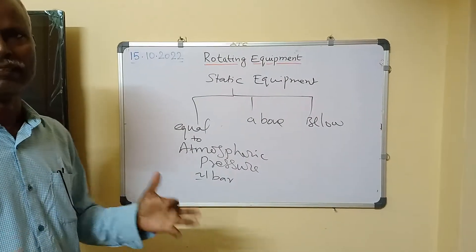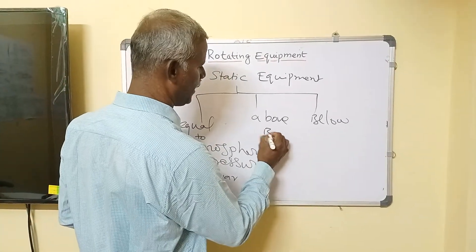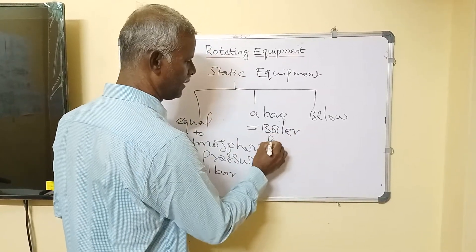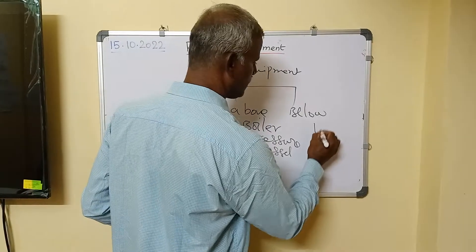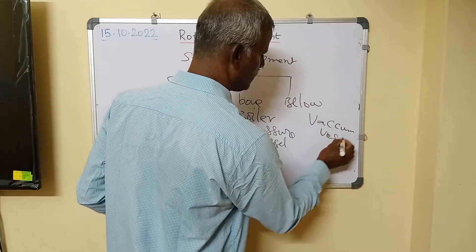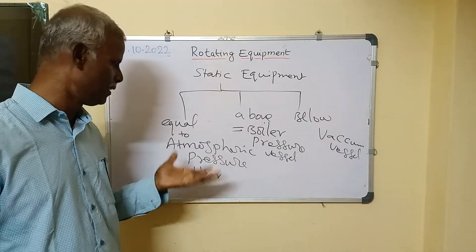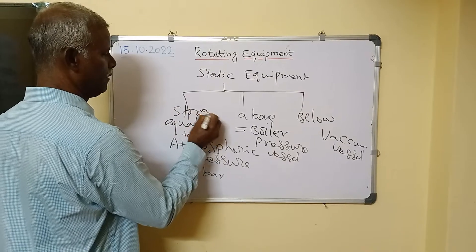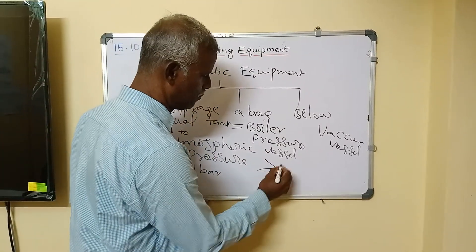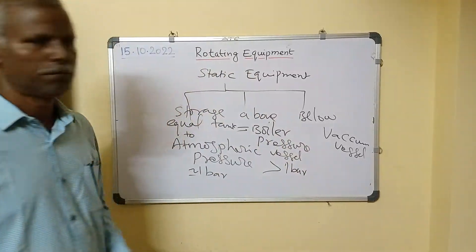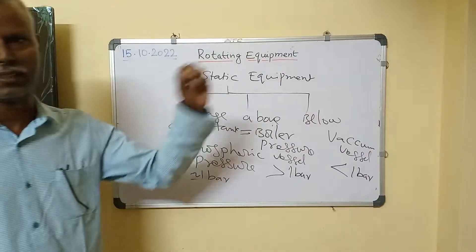Equal to atmosphere means it is a storage tank — example, storage tank. Above atmospheric pressure, example, evaporator or boiler — these are called pressure vessels. Below atmospheric pressure — that is below one bar — those are called vacuum vessels.